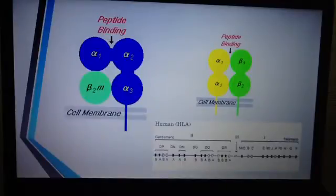So class 1 MHC molecules are found on the surface of all nucleated cells, and they are involved in cellular immunity, whereas the class 2 MHC molecules are only found on the surface of cells that display antigens, and that would be the B cells and the macrophages, and they are involved in humoral immunity.